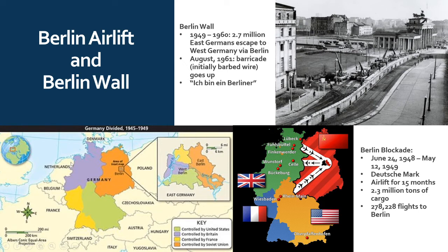Let's start looking at this map. In the aftermath of World War II, the Allied powers — the United States, Great Britain, France, and the Soviet Union — decided to split Germany into four separate regions, where each region was governed by one of those countries. The green area was controlled by the United States, yellow by France, purple by Britain, and orange by the Soviet Union.